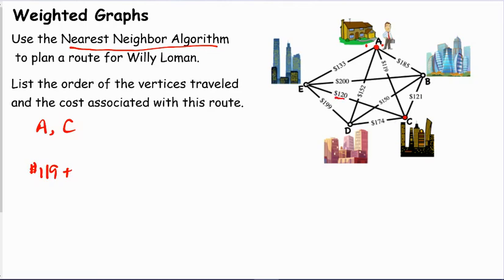Once I get to C, I have three edges I need to consider. The $120 edge to E is the nearest neighbor. Once we're at E, we do not want to go back to A because that has to be last. We have B and D. So that's $200 and $199. So $199 is the nearest neighbor at vertex D. Now we have to go to B, which is $150. And then we must return back to A, which is $185.